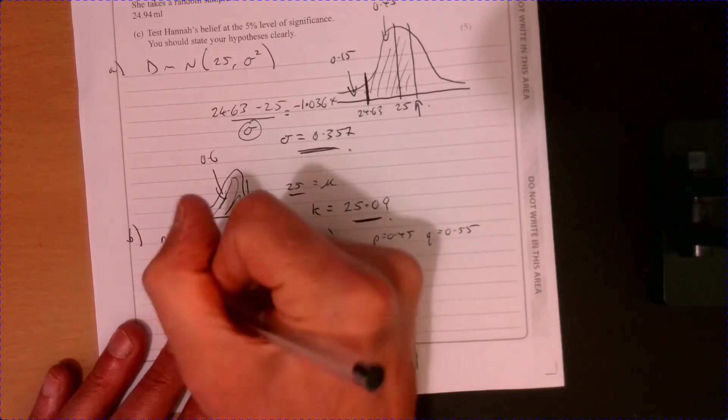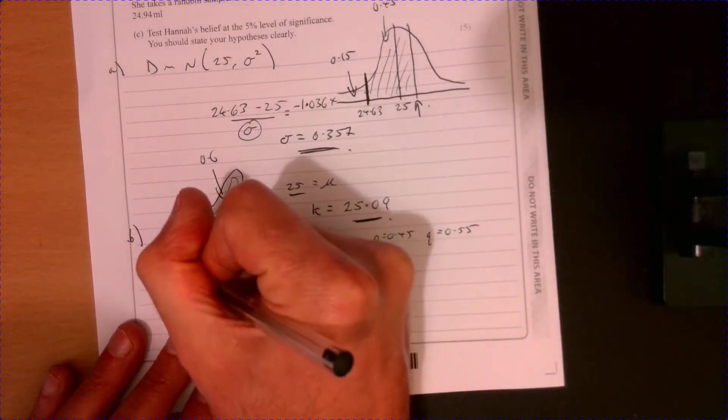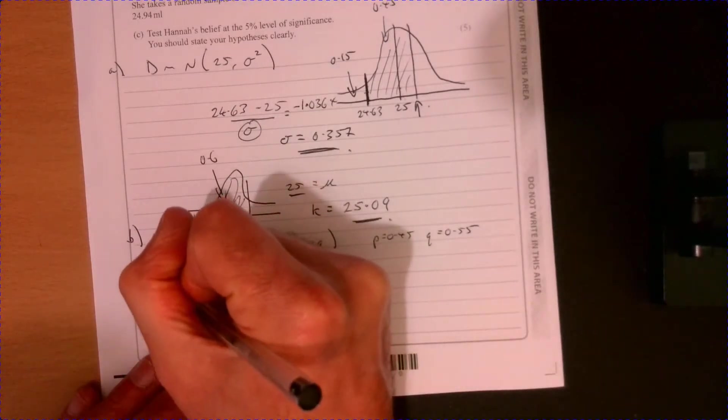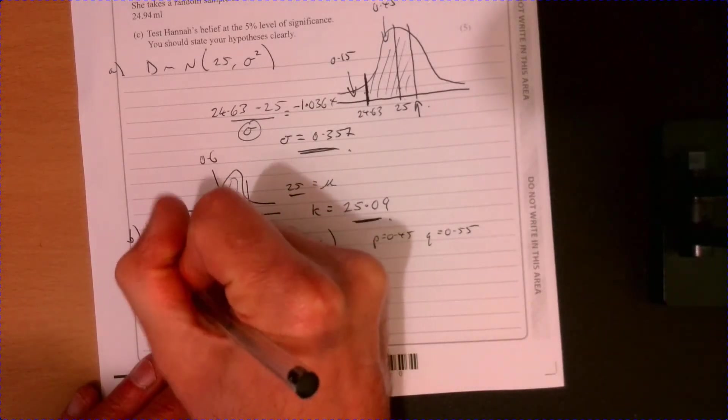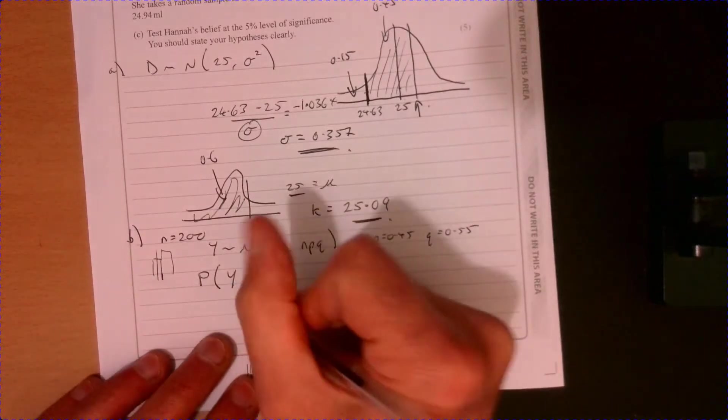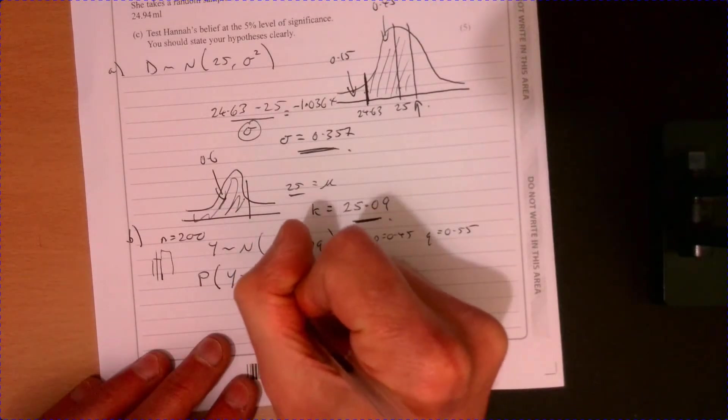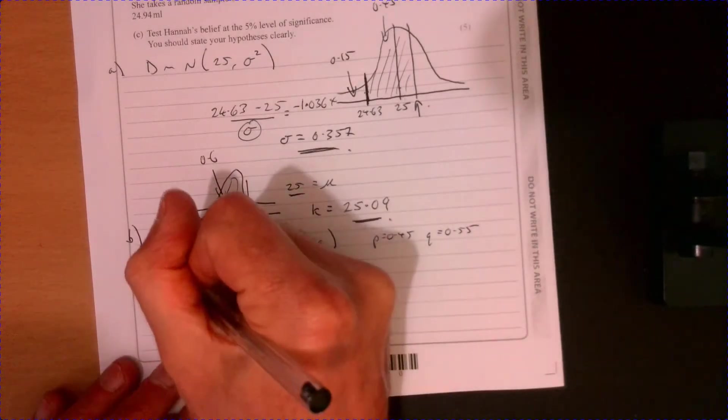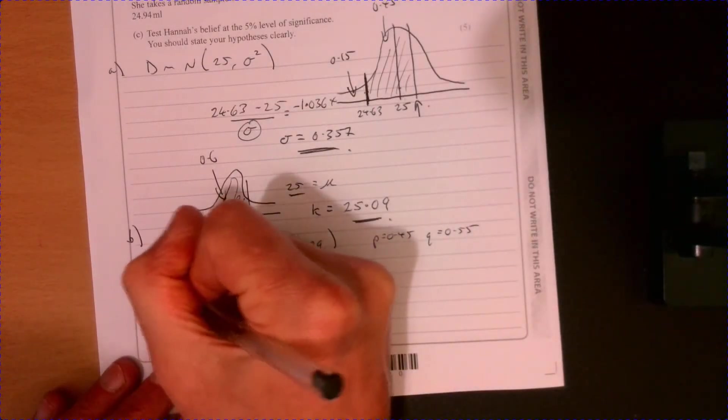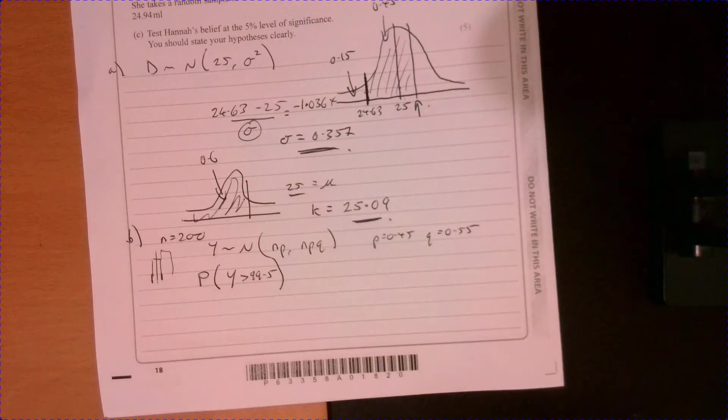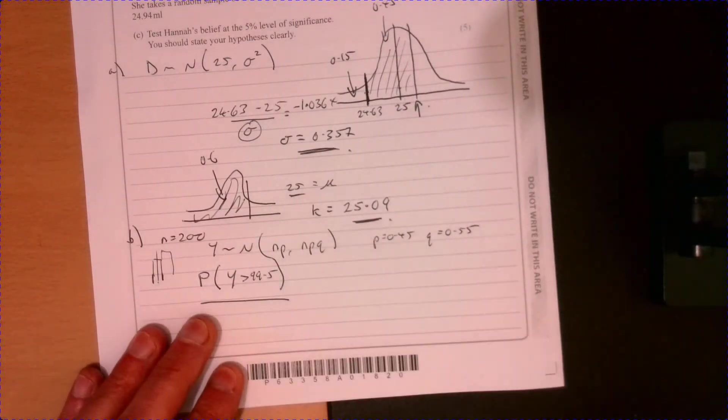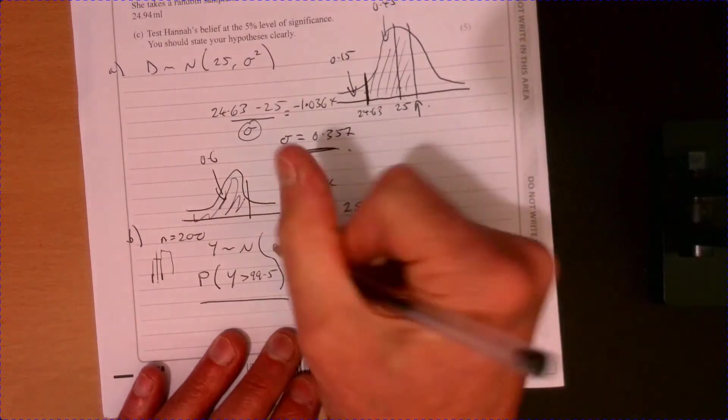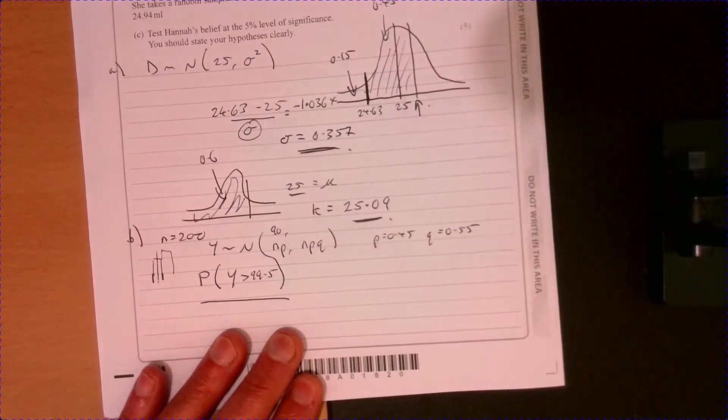But because it's an approximation, remember you've got like the bars and your approximation. When you say it's fewer than 100, like that's there, we need to go. So it's actually fewer than 99.5. So you need to make that correction there. So imagine like 100 there. So we're going to actually have to come down 0.5. So that's what we've actually got to work out.